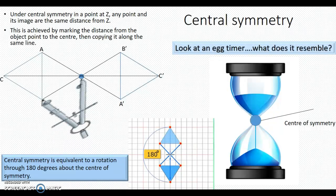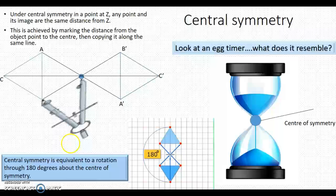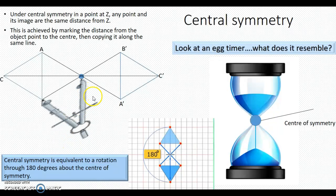As you can see, under central symmetry in a point at Z, any point and its image are the same distance from Z. This is achieved here in the diagram in the triangle ABC by marking the distance of the object point to the center.